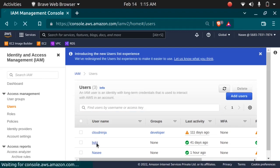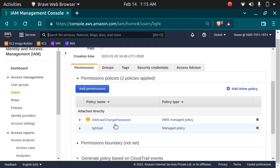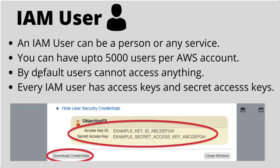As you can see in this section, I have attached a permission policy — policies applied to this user allow the user to change password and access the LightSail service. You have to attach the policy; by default users cannot access anything. Every IAM user has an access key and secret access key. Please note that you should not share or expose your access key with anyone, because if a hacker gets hold of your access keys and secret access keys, you can get a huge bill in your AWS account. Never share your access key or secret access key.